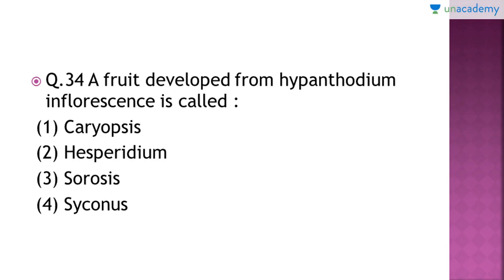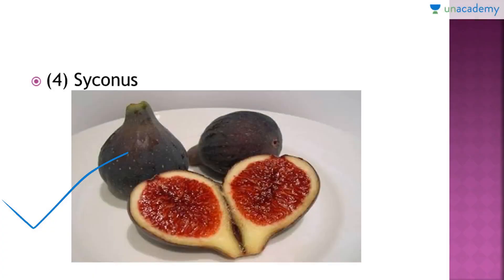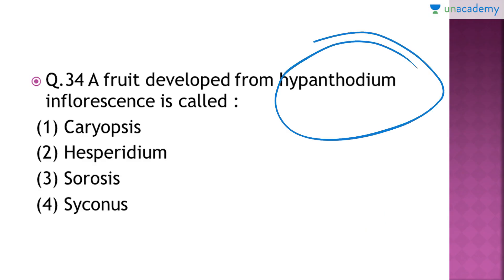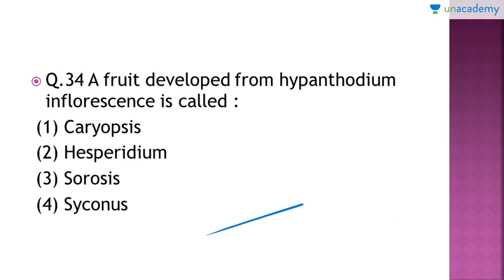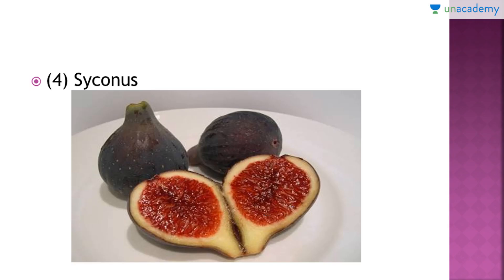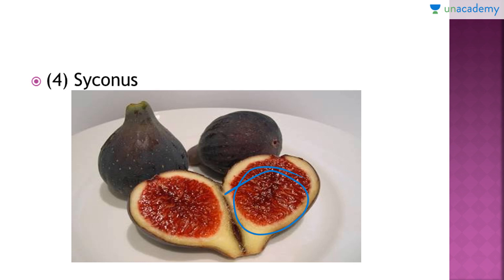Question number 34: a fruit developed from hypanthodium inflorescence is called which of the following? The right answer is option number four, that is syconus. Syconus is actually a fig fruit. Hypanthodium inflorescence means a type of inflorescence in which the receptacle converts into a cavity-like structure. Here you can see it — this cavity-like structure is the receptacle part, and inside this cavity the fruit is formed. This red portion that you see is the fruit, which is the edible part.